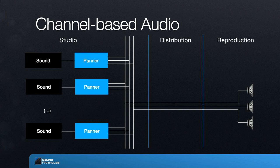Pretty much what happens is what you see on the image. You have several sounds on your mixing desk, on your digital audio workstation. Then each sound you're going to pass through a panner where essentially you say: okay, where do I want the sound to be positioned? Do I want this on the front, slightly to the left side, on the sides, whatever you want.